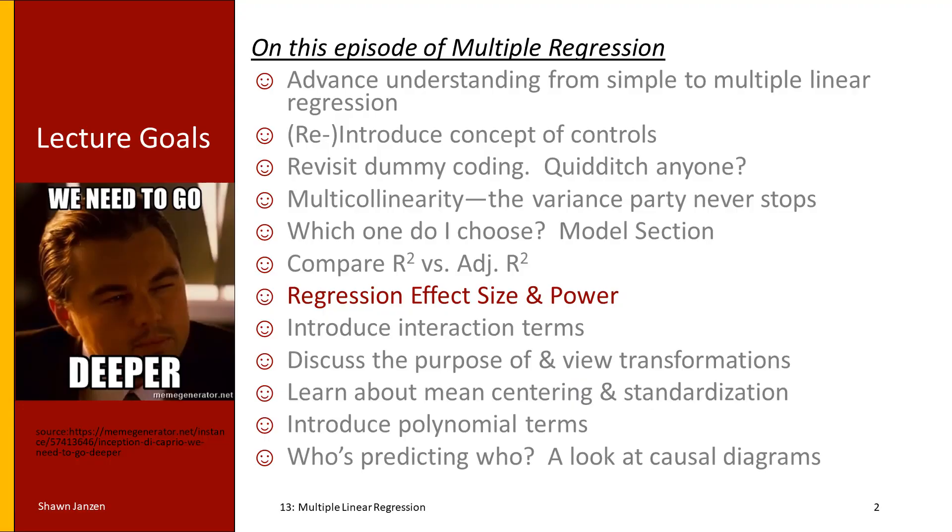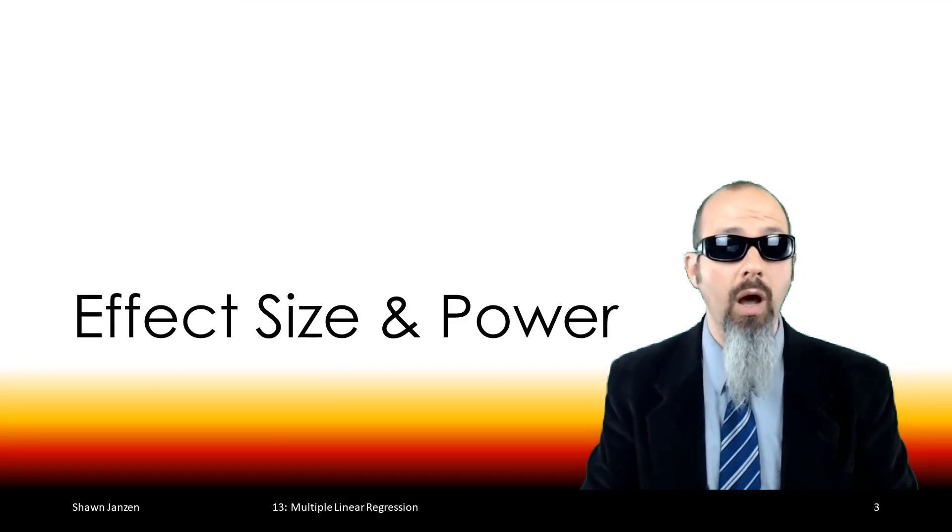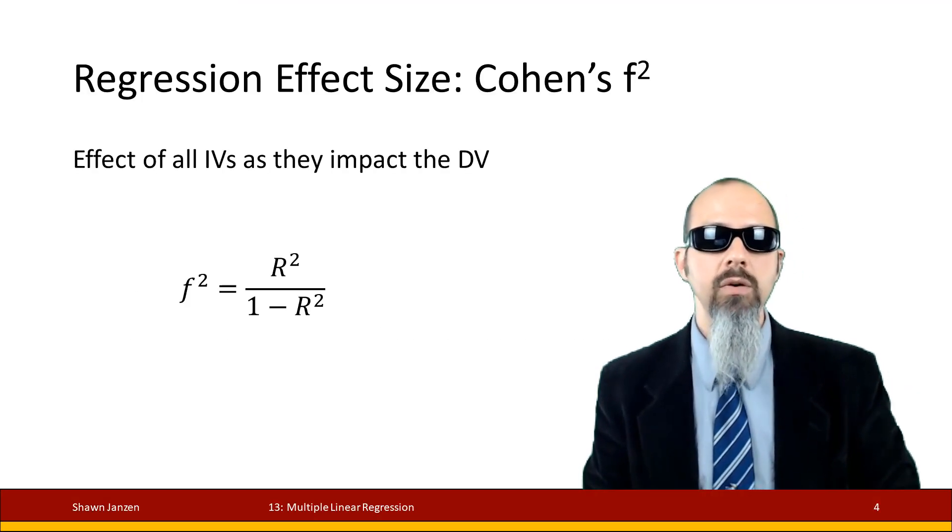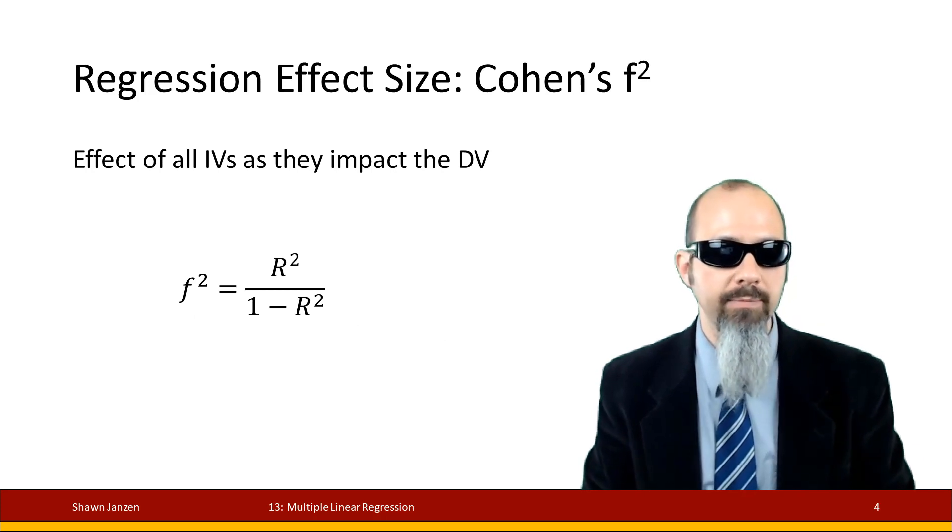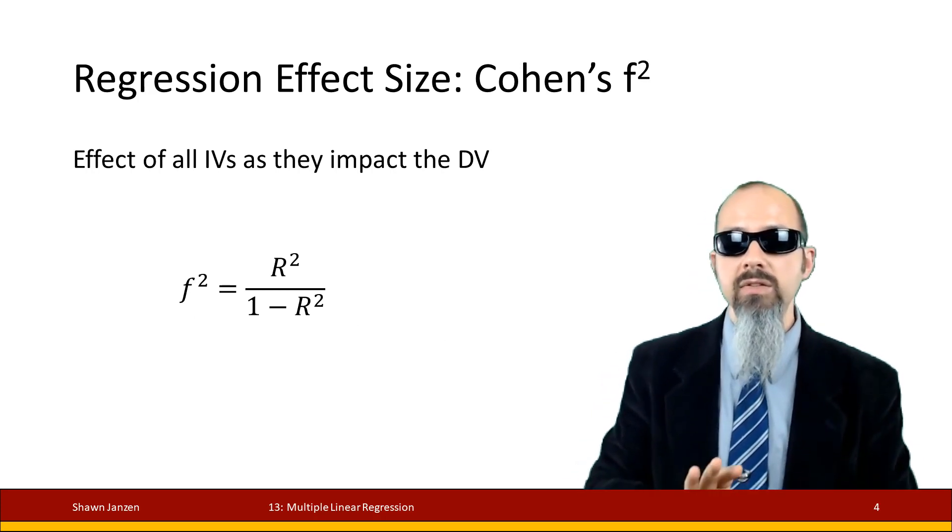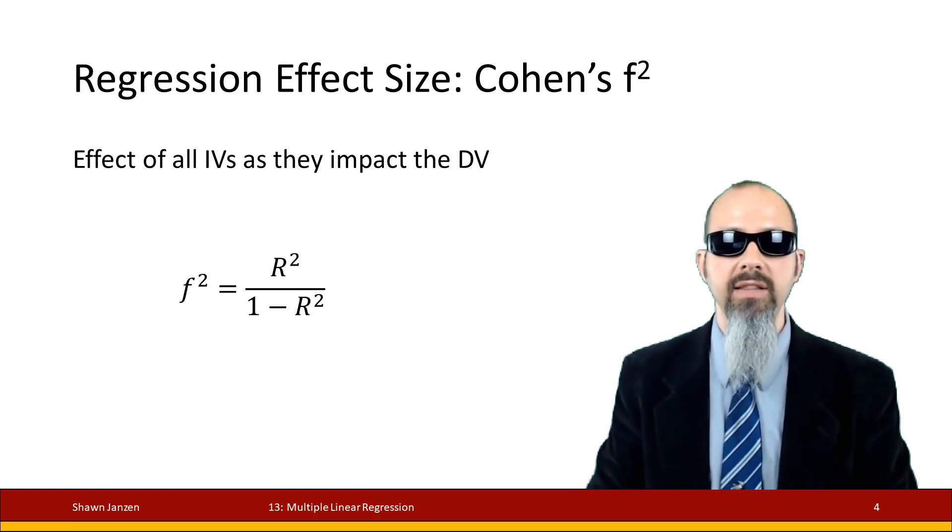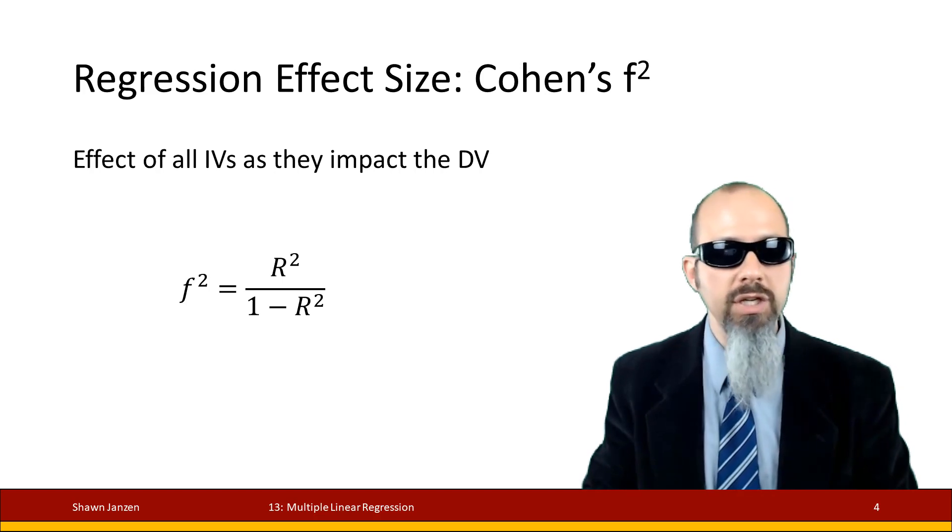There are a few new things to learn here, but not too much as we connect it to what we already know. Let's look at effect size and power. When we're looking specifically at effect size, this new one is Cohen's f². You've already had things like Cohen's d, Hedges' g, Hedges' h - now we've got Cohen's f².